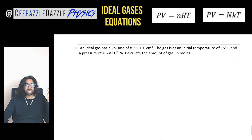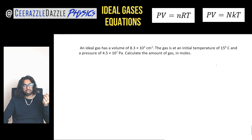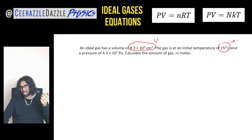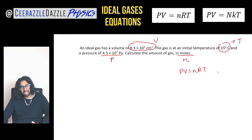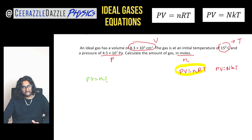Let's tackle an exam question. An ideal gas has a volume of 8.3 × 10³ cm³, an initial temperature of 15°C, and a pressure of 4.5 × 10⁷ Pascal. Calculate the amount of gas in moles. We've been given volume, temperature, and pressure — and we need lowercase n, the number of moles. Since we want moles, we use PV = nRT, so n = PV / RT.